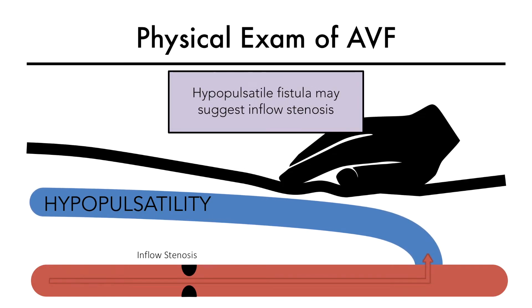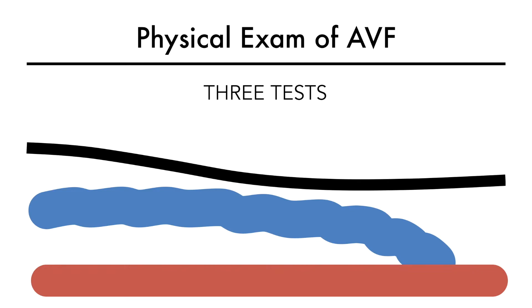Now that we've assessed a fistula for its thrill, bruit, and pulsatility, let's learn three simple bedside tests that can help assess inflow and outflow through a fistula, as well as check for accessory veins, that is, side branches coming off of a fistula.